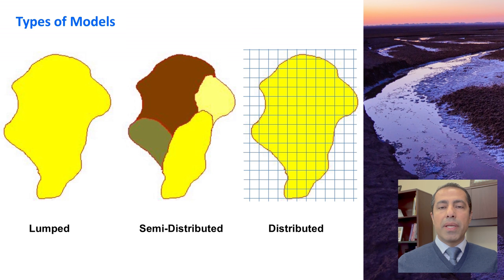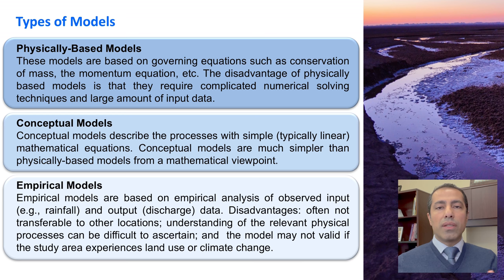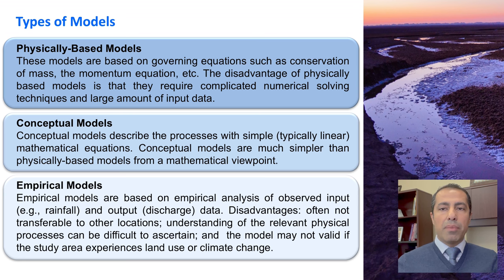A distributed model is typically a gridded model with regular or irregular grids, and in each grid we calculate all the processes in our model. Distributed models are more complex, they require more data, and they only make sense if we have the required spatial information. From a model structure viewpoint, we have broadly three types of models: physically-based, conceptual, and empirical.